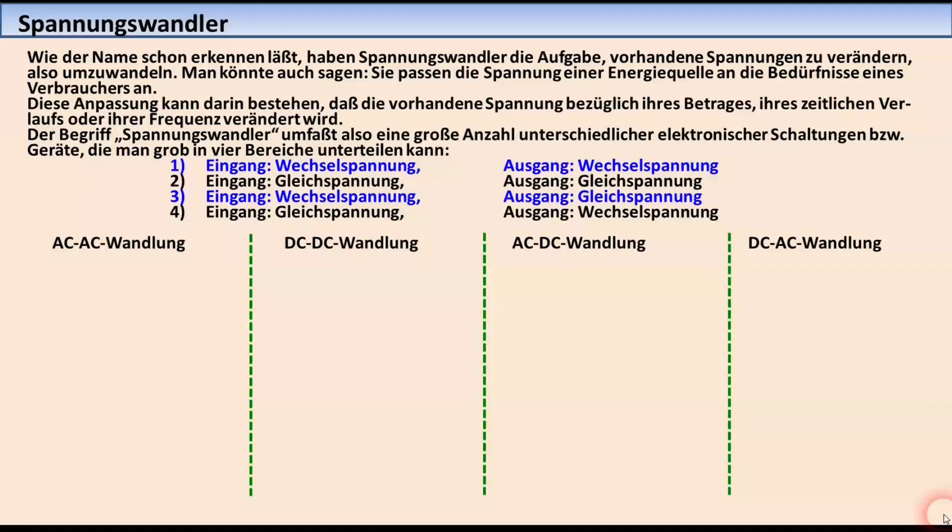Genau genommen gehören aber noch viele weitere Geräte zu den Spannungswandlern. Wie der Name schon erkennen lässt, haben Spannungswandler die Aufgabe, vorhandene Spannungen zu verändern, also umzuwandeln. Man könnte auch sagen, sie passen die Spannung einer Energiequelle an die Bedürfnisse eines Verbrauchers an. Diese Anpassung kann darin bestehen, dass die vorhandene Spannung bezüglich ihres Betrages, ihres zeitlichen Verlaufs oder ihrer Frequenz verändert wird. Der Begriff Spannungswandler umfasst also eine große Anzahl unterschiedlicher elektronischer Schaltungen bzw. Geräte, die man grob in vier Bereiche unterteilen kann.